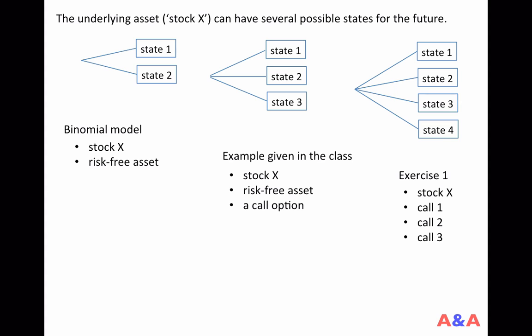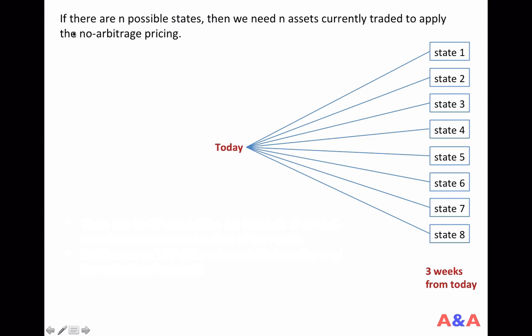In general, if there are n possible states for the underlying asset, we need n assets. The last exercise was the four-state, four-asset example: four possible states for stock X, and four assets that could be used for replication. Given that setting, we priced other call options and put options. In general, if there are n possible states for the future, then we need n assets currently traded to apply the no-arbitrage pricing theory.